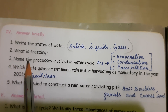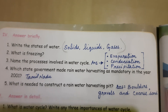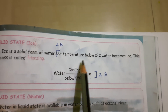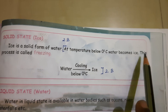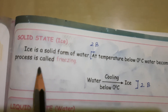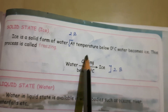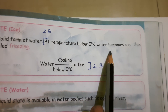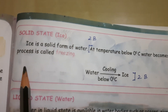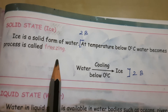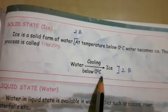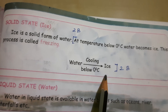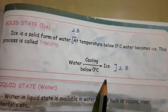Second question: What is freezing? At temperature below 0 degree Celsius, water becomes ice. This process is called freezing. You can also write this as an equation: water below 0 degree Celsius, that is by cooling, it becomes ice. This process is called freezing.